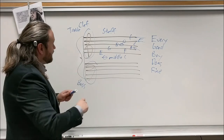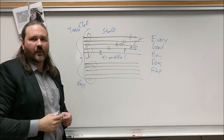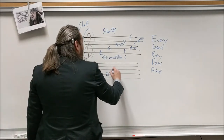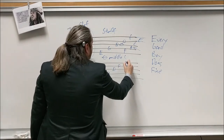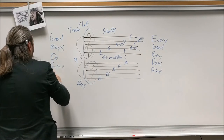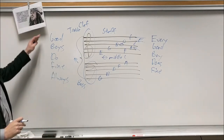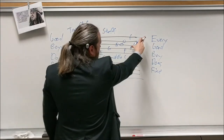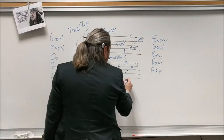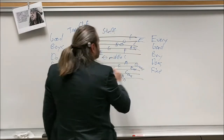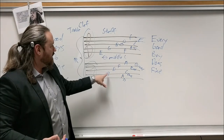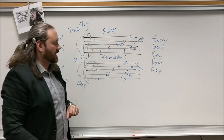The bass clef staff is the whole arrangement shifted down one line and one space. Instead of starting with E, the bottom line is G, giving us G, B, D, F, A — remembered as 'Good Boys Do Fine Always.' The spaces are A, C, E, G — remembered as 'All Cows Eat Grass.' Of course, the treble clef spaces still spell FACE.